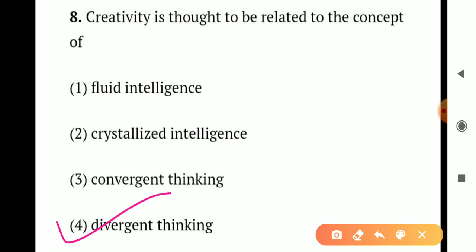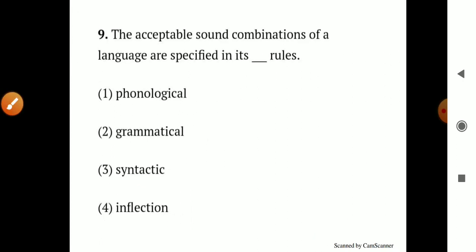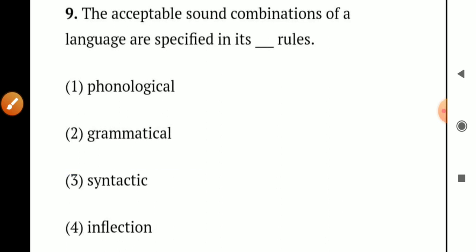Question number 9. The acceptable sound combinations of a language are specified in its: Option 1 - phonological rules. Option 2 - grammatical rules. Option 3 - syntactic rules. Option 4 - inflection rules. Sound combinations are specified in phonological rules. So the correct answer is Option 1 - phonological rules.